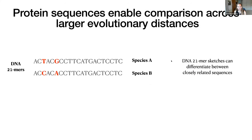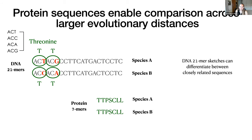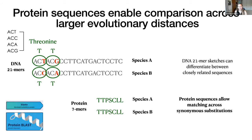The majority of minhash methods have focused on DNA k-mers, which are most useful for differentiating between closely related sequences. If we have a couple of example 21-mers with two base pair differences, in many cases they are synonymous substitutions that end up as the same amino acid. In this example, these two protein sub-mers are exactly identical. This illustrates that protein sequences allow matching across synonymous substitutions — we've been using this with BlastX protein blasts for quite a long time. MASH screen is the first example of using protein k-mers for some identification.